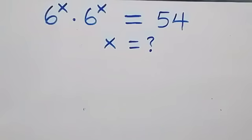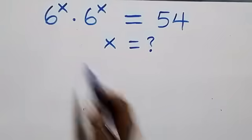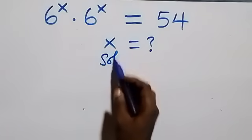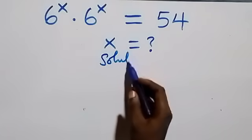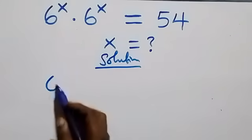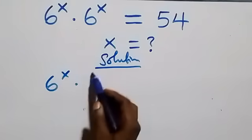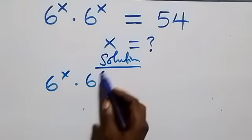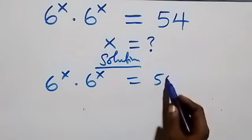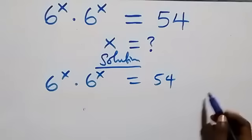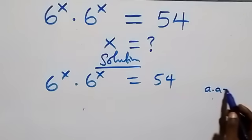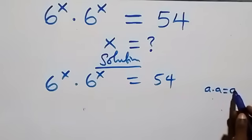Hello, you are welcome. How to solve this nice exponential equation. What we have here is 6 raised to power x times 6 raised to power x equals 54. When we have a times a, it is the same thing as a squared.